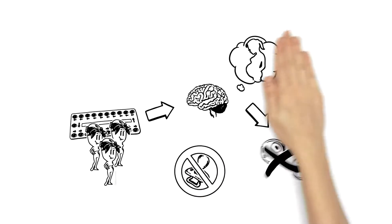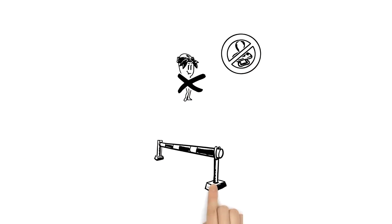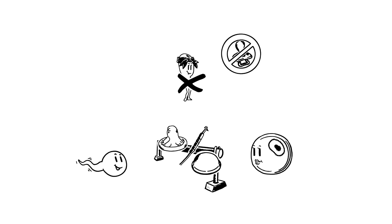But there are also contraceptives that work without hormones. They prevent a pregnancy by stopping the sperm on its way to the egg cell. Condoms, copper coils and the diaphragm work in this way.